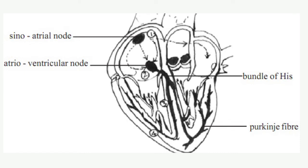The electrical impulse originates from the SA node, the pacemaker, and it generates impulses that are transferred to the AV node, causing contraction in the atria and ventricles. At the same time, the AV node transports the impulse to the bundle of His and Purkinje fibers, which stimulate the ventricles to contract. This is how rhythmic contraction and relaxation occurs through the transportation of impulses from the pacemaker.